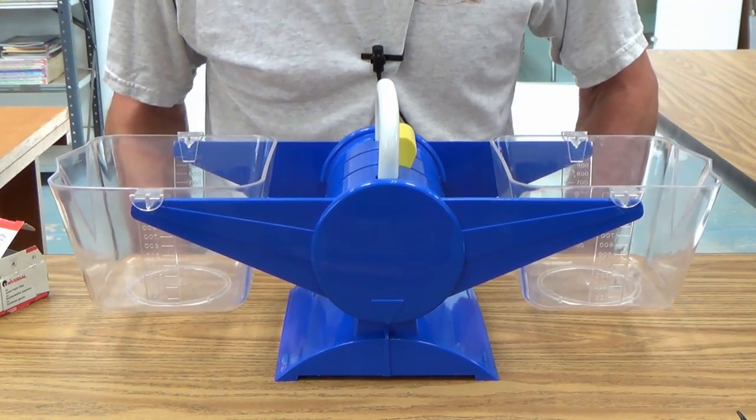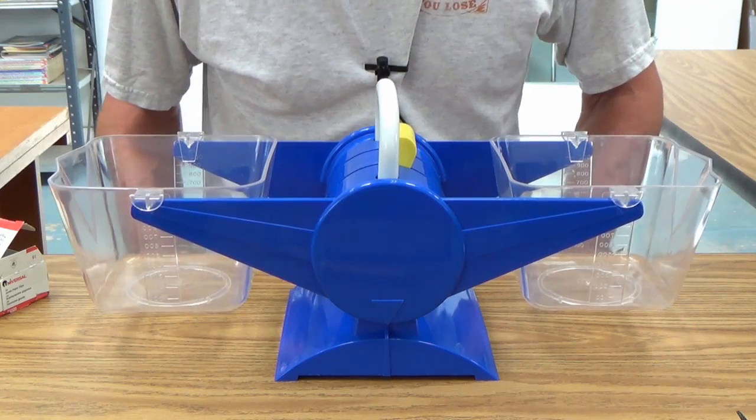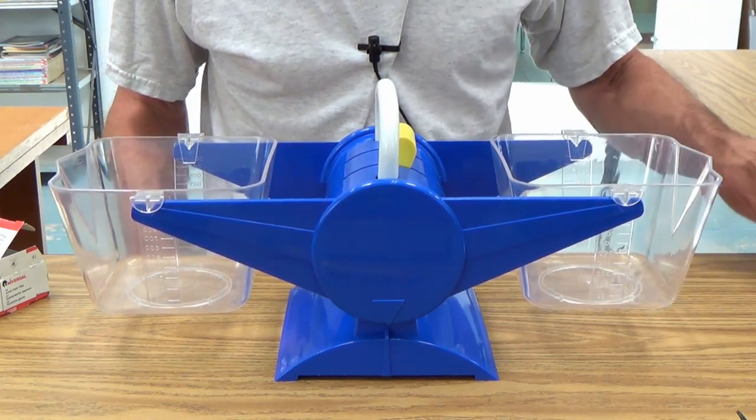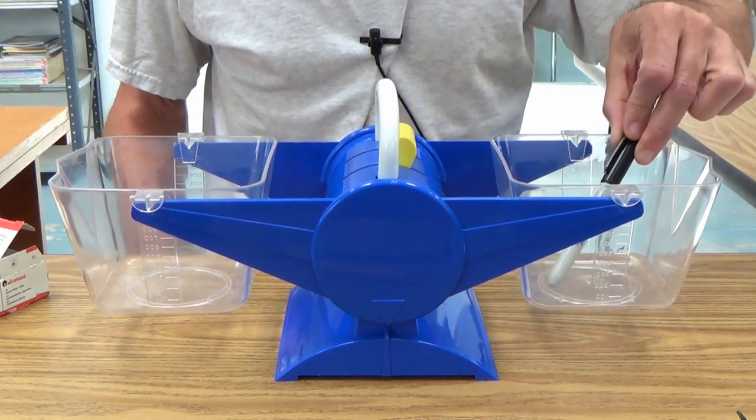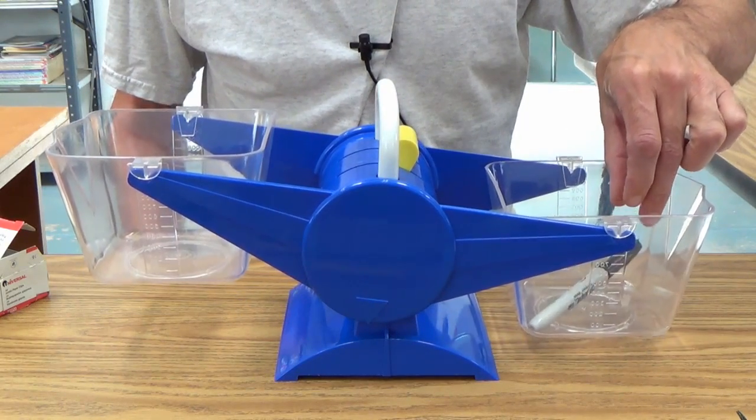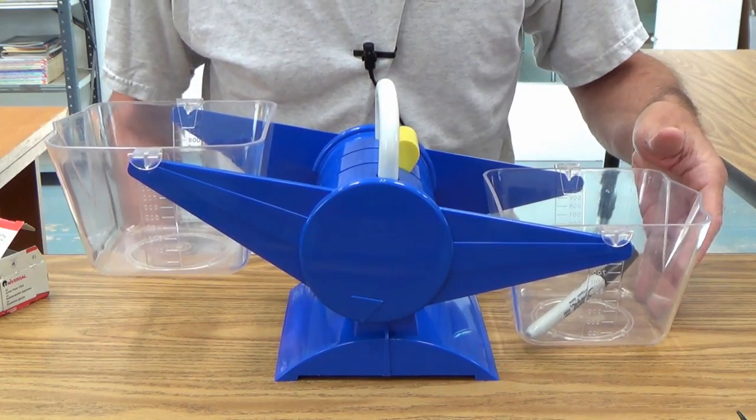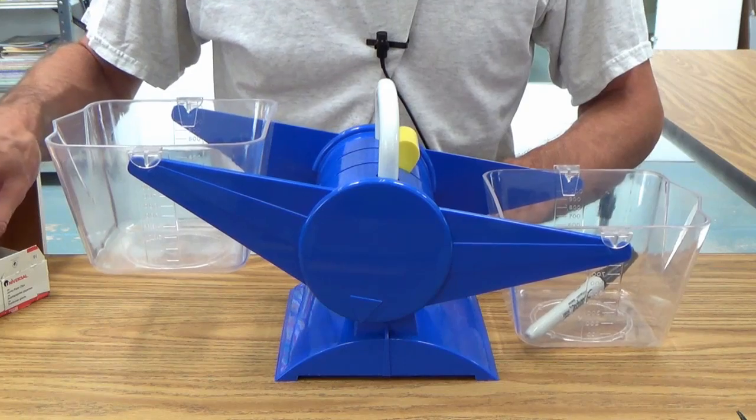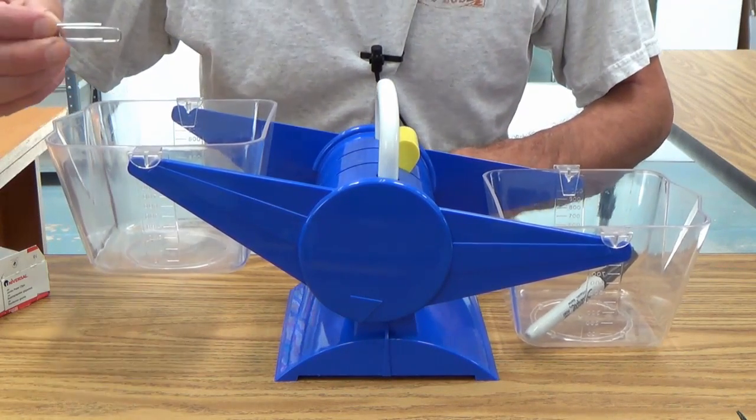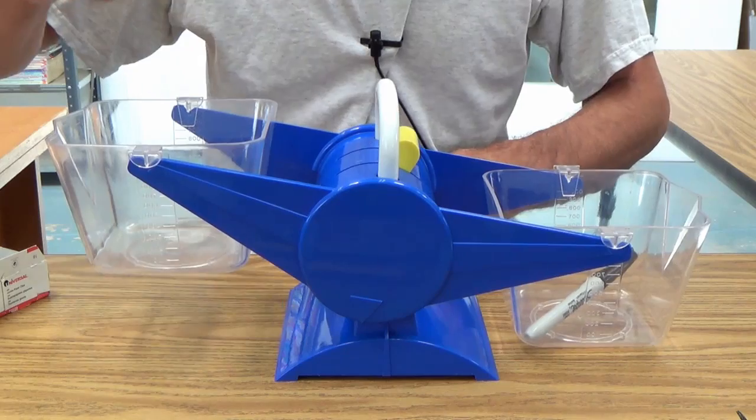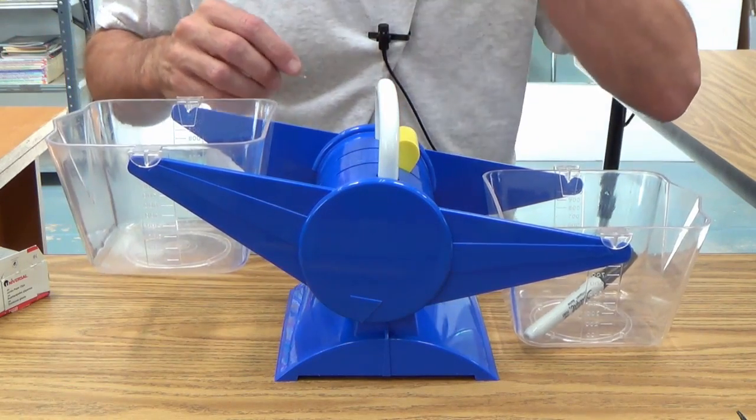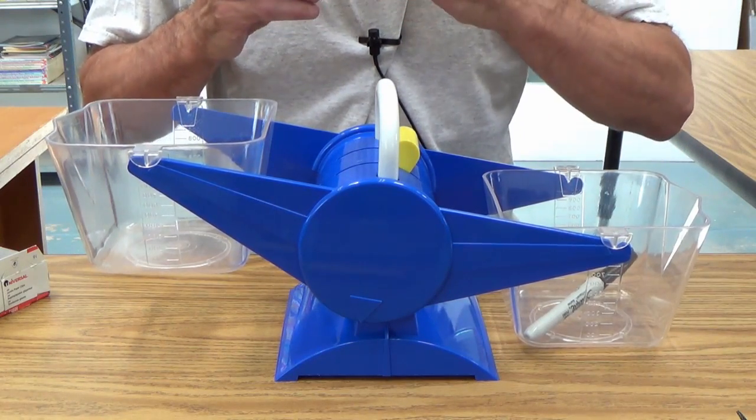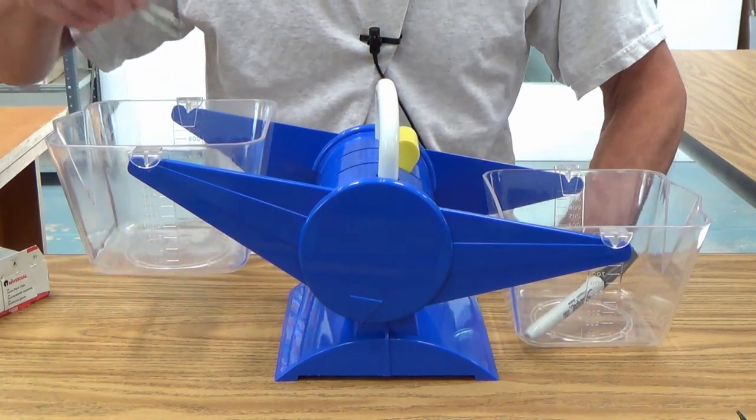And just to show you that you can work with some lighter objects and some lighter non-standard units and compare, let's do this. Let's put this marker over here in this bucket, and of course, it's going to go down. It's heavier than this side. And now, let's see how many paper clips, which are obviously a much lighter item also, will it take to balance out this scale. In other words, the Sharpie marker will be equal to how many paper clips?